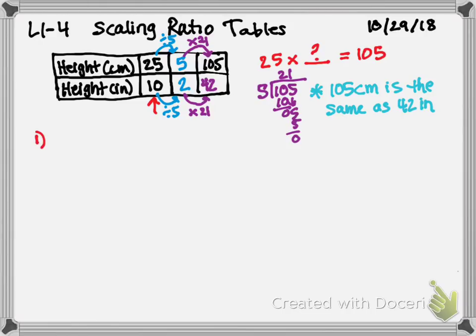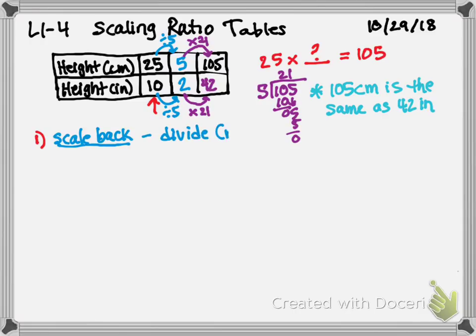So my two steps are: number one, I needed to scale back. When I scale back, I'm going to divide — or in other words, reduce — the original ratio. The reason I'm doing this is to see if I can find a number that goes evenly into a target number. My target number is always in the end column, so 105 here would be the target number.